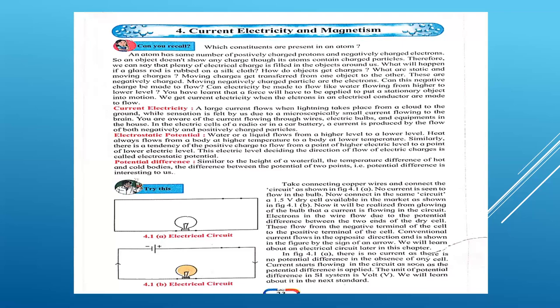To move electric charge, we require potential difference. Like in your house, you have a water tank. When you open the tap, water comes out. Why? Because the tank is at a higher level and the tap is at a lower level. In the same way, in electricity the charge flows from higher level to lower level.